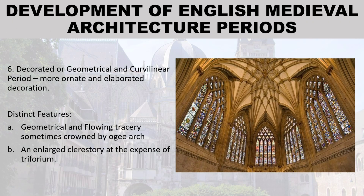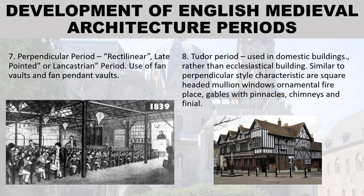Number six: Decorated or Geometrical-Curvilinear period — more ornate and elaborated decoration. Distinct features include: (a) geometrical and flowing tracery, sometimes crowned by an ogee arch; (b) an enlarged clerestory at the expense of the triforium.